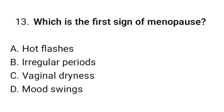Question number thirteen: Which is the first sign of menopause? The correct option is B. Irregular periods.